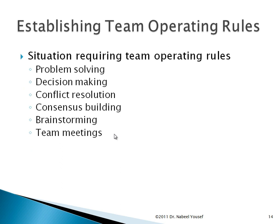To work in teams, we have to establish team operating rules. The main situations requiring team operating rules are: problem solving — how are we going to solve the problem and what meetings are needed; decision making — how we are going to make decisions and who makes them; conflict resolution — how we can solve conflict without affecting the customer or outcome; consensus building through brainstorming sessions; and team meetings. All these are called operating rules.